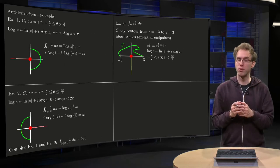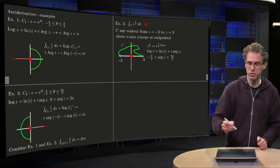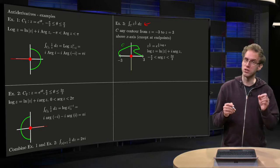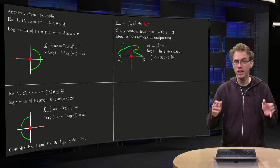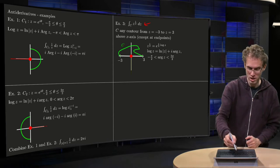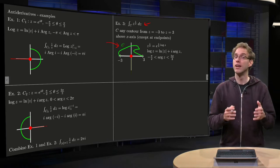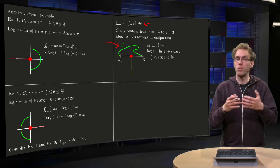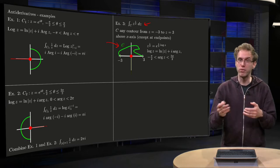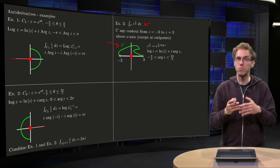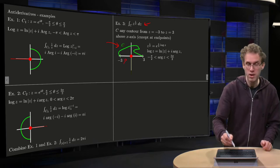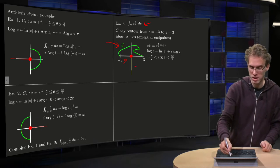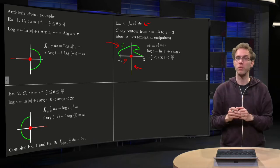A third example involving a square root: we want to integrate the square root of z, and our contour is only specified as going from z equals minus 3 to 3, somewhere fully above the real axis. We have a square root, so we want to use an antiderivative, and we have to define the log somewhere, because power functions always involve log. We can take our branch cut on the negative imaginary axis, because in that way we stay away from our contour and we are safe.